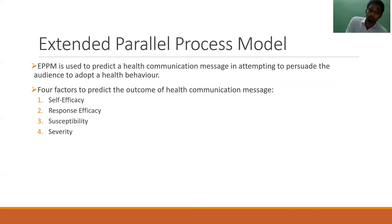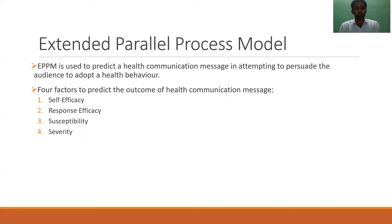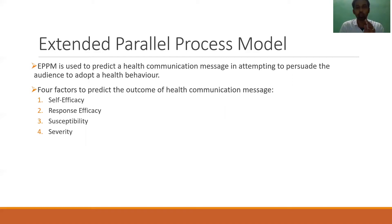The extended parallel process model is commonly used among health communication researchers. It is used to predict whether or not a health communication message with fear appeal will bring about a health behavior change among the audience who consumes the health message. It is predicted based on the presence of four factors. With respect to obesity, these are: Severity — a health message communicating the severe risks of obesity; Susceptibility — a health message communicating the possibility of obesity impacting them; Self-efficacy — a person's belief that they have the ability to adopt health behavior to control obesity; and Response efficacy — a person's belief that if a health behavior is adopted, it will control obesity.